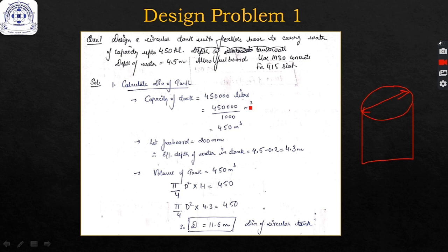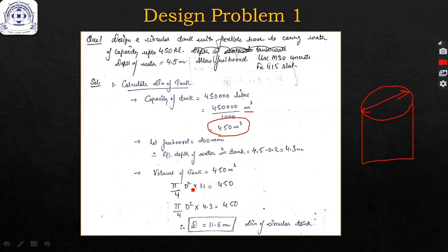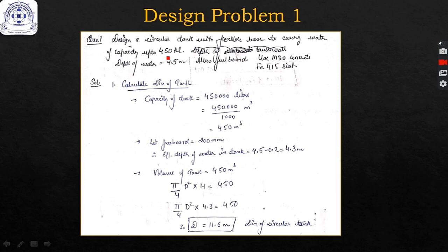Required capacity is 450 kiloliters = 450,000 liters = 450 m³. Allowing a freeboard of 200 mm, the effective depth of water is 4.3 m. Volume of a cylinder is (π/4)·D²·h. Setting this equal to 450 m³ with h = 4.3 m, we calculate the diameter D of the circular tank.